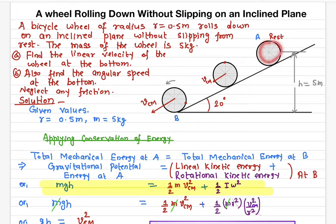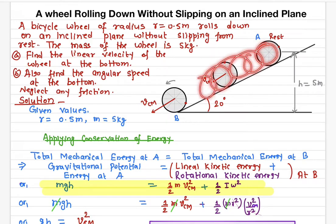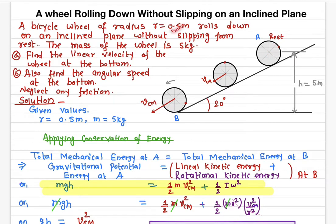The wheel is all the time rotating about its axis — it is not just slipping, it is rotating about its axis. What is given is the radius of the bicycle wheel, which is 0.5 meter.